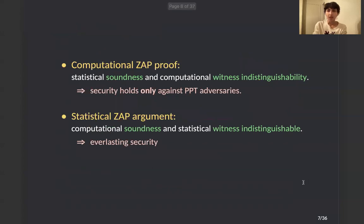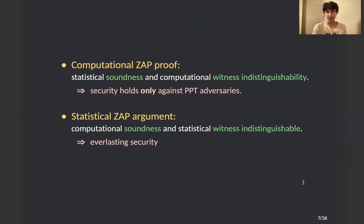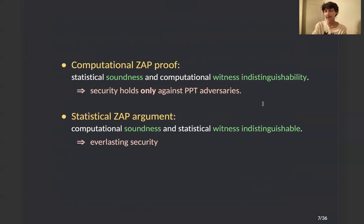We have two types of ZAP protocols. First are computational ZAP proofs, which have a statistical soundness property and a computational witness indistinguishability property — meaning security holds only against probabilistic polynomial-time adversaries. The other type is called statistical ZAP arguments, which have computational soundness and statistical witness indistinguishability, meaning we have everlasting security.